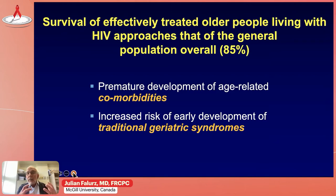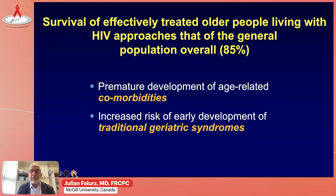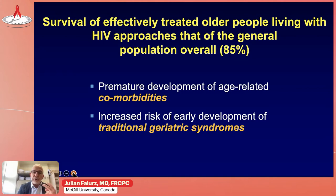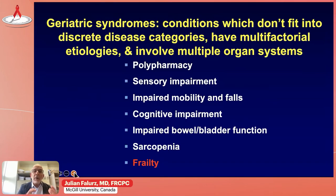The survival of effectively treated older persons with HIV approaches, but is not exactly the same as, the general population — about 85 percent — though in some subgroups survival may be the same. The major reason for this decreased survival is due to two things: the premature development of age-related comorbidities, and increased risk of the early development of traditional geriatric syndromes. Geriatric syndromes are conditions which don't fit into discrete disease categories; they have multifactorial etiologies and involve multiple organ systems.